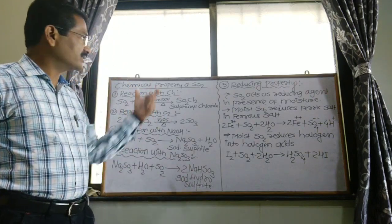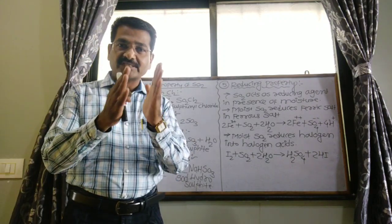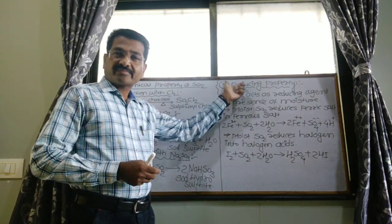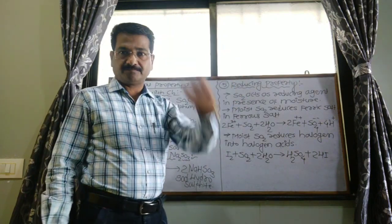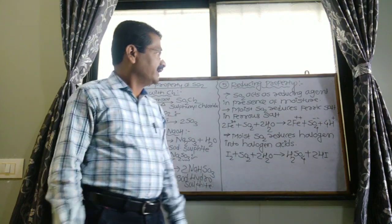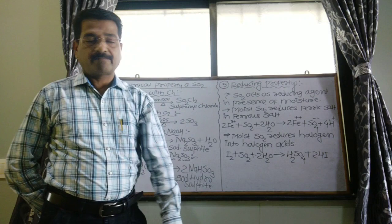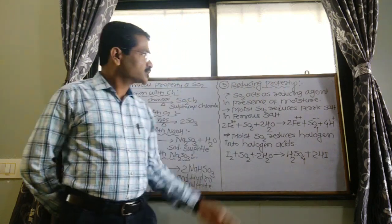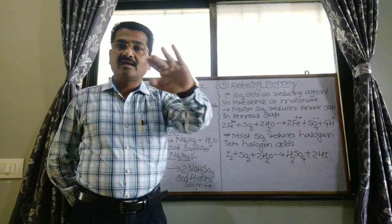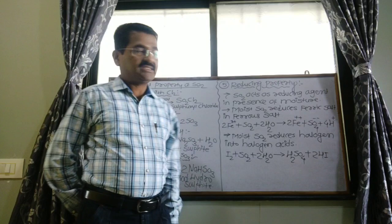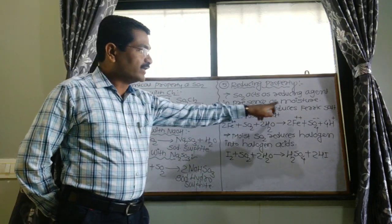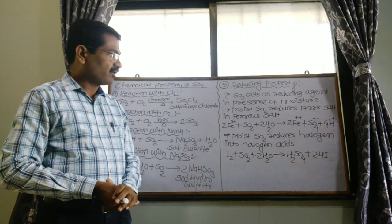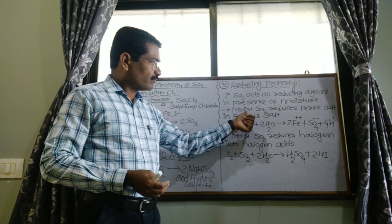All these are the chemical properties of sulfur dioxide, indicating reactions with different substances to produce a number of compounds. The last chemical property of sulfur dioxide is its reducing property. Sulfur dioxide acts as a reducing agent in the presence of moisture. In dry conditions, sulfur dioxide cannot show reducing property, but in moist, that is aqueous medium, it shows reducing properties. In moist conditions, sulfur dioxide reduces ferric salt into ferrous salt.